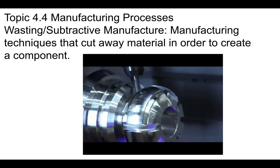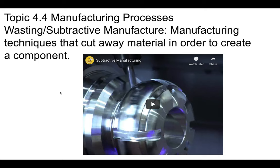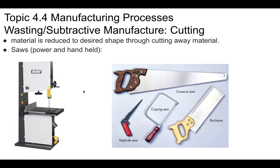The opposite of additive is subtractive, or wasting, manufacturing — here you're cutting away material in order to create your component. Have a look at this short video: it shows a milling machine subtracting material away from a block of aluminum to make a finished part. So let's talk about some different types of subtractive manufacturing.